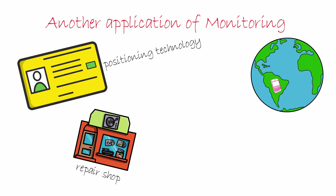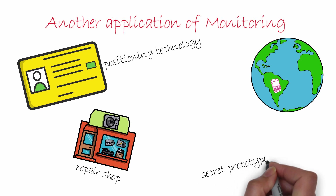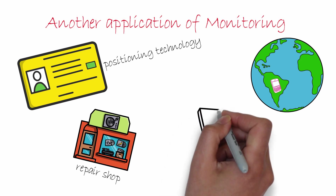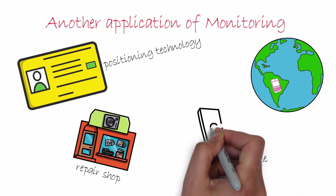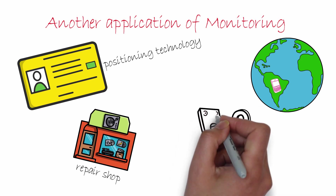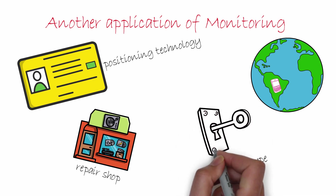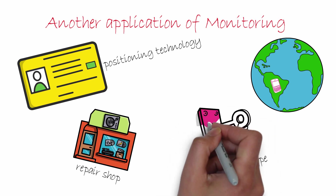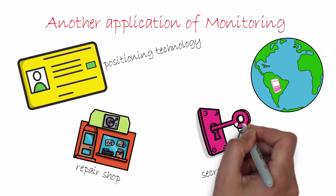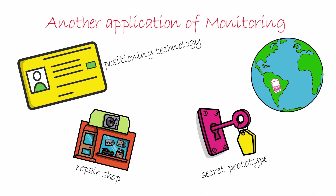Imagine Apple or Samsung developing their next big product and not wanting their secret to leave their labs. They can put a positioning tag on the prototype and program it to sound an alarm if it leaves the lab, hence improving security.